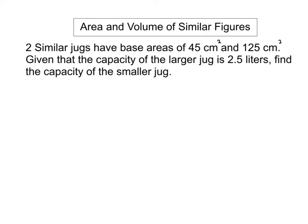So first of all, since the base areas have a ratio of 45 to 125, we can say that the height of the smaller jug to that of the larger jug will actually be the square root of 45 to the square root of 125.